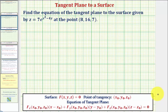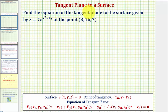We want to find the equation of the tangent plane to the surface given by z at the point eight, comma sixteen, comma seven. Before we do this, let's look at this graphically.